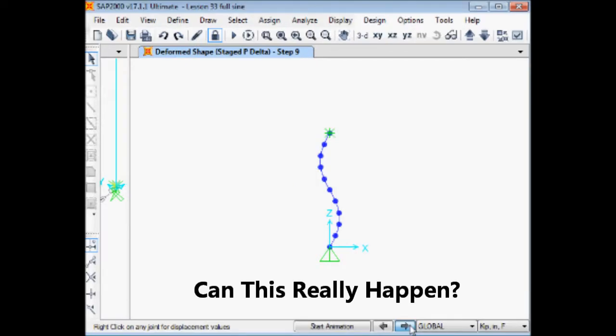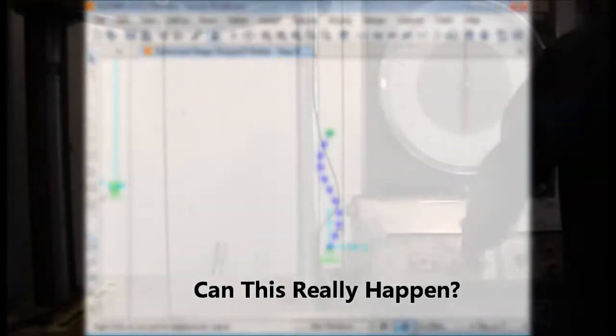But would this really happen? The purpose of this experimental investigation is to find out if the shape of the initial crookedness can actually be tailored to result in a mode 2 buckling mode.